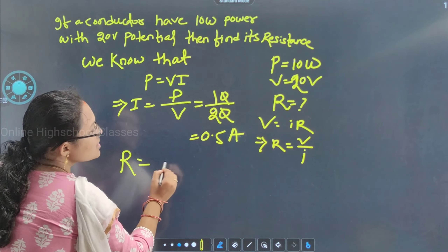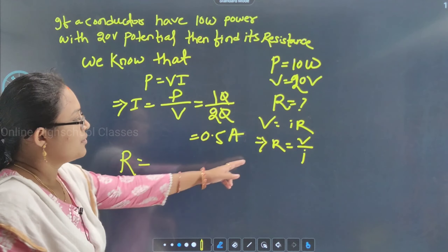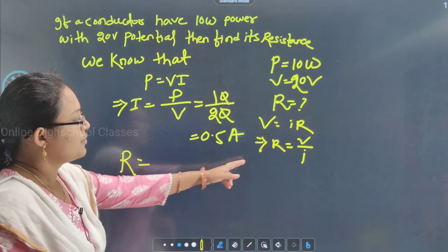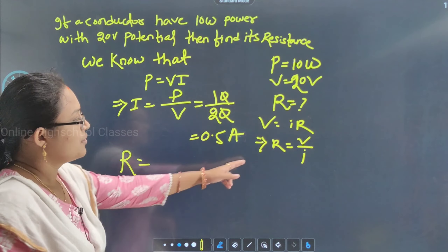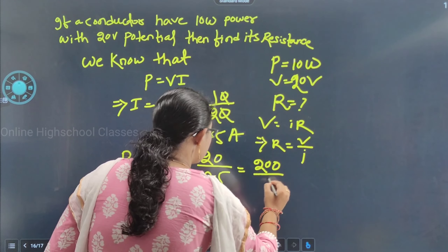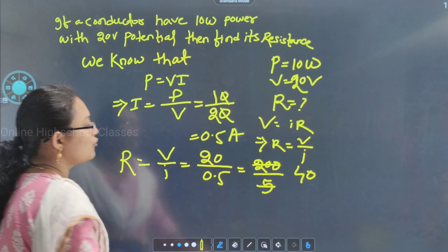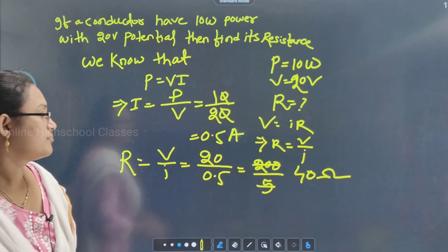Now R = V/I = 20/0.5 = 200/5 = 40 ohm. So the resistance is 40 Ω.